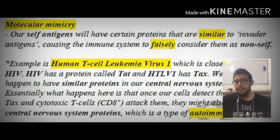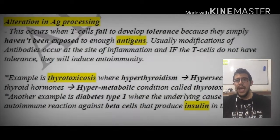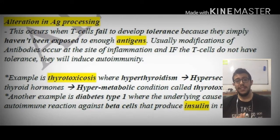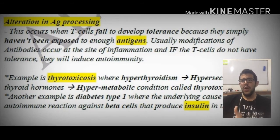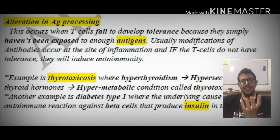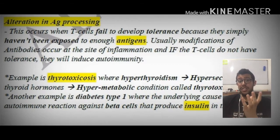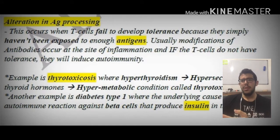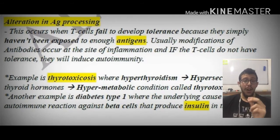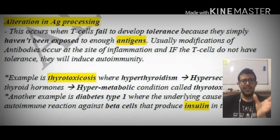There is an example about the human T-cell leukemia virus 1, or HTLV-1, which we won't get into in detail, but feel free to go through it and read it — it's very interesting. Now, alteration in antigen processing is also one of the ways that can cause autoimmune diseases. This occurs when T-cells fail to develop tolerance because they simply haven't been exposed. Usually, modifications of the antibodies occur at the site of inflammation, and only if the T-cells do not have the tolerance, they are going to induce autoimmunity. If these cells have already been exposed to these antigens or epitopes, they will not induce autoimmunity but instead induce a proper immune response.